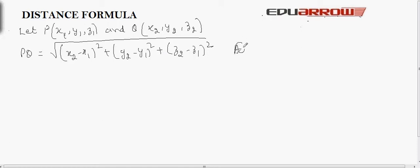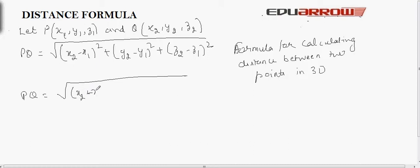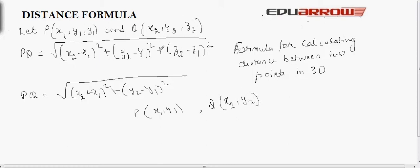This is the required formula for calculating distance between two points in 3D. The difference between the 2D distance formula and the 3D distance formula lies in the fact that in 3D, the z-axis is also included. So we include one more term in the formula, that is (z2 minus z1) raised to 2. In 2D, the formula is under root of (x2 minus x1) squared plus (y2 minus y1) squared, where coordinates of P are x1, y1 and Q are x2, y2. Here we have one more coordinate extra, so the z-axis is also included in the formula.